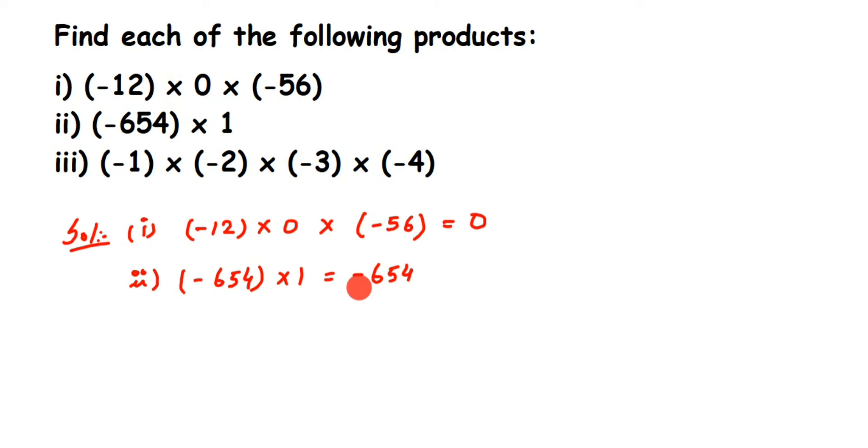Then the third one: it's minus 1 multiplied by minus 2 multiplied by minus 3 multiplied by minus 4. So let's multiply the numbers. 1 times 2 is 2, 2 times 3 is 6, 6 times 4 is 24. Now I multiplied all the numbers. What about the negative sign? Now, see, like I said before, count the number of negative signs.